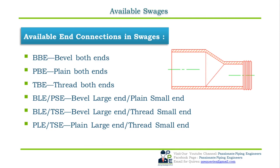Swedges with both ends beveled are for direct connection to butt welded fittings or bevel-ended pipes. Socket welded swedges have plain ends on both sides to be inserted into sockets, or one side plain and one side beveled for butt welded fittings with large bore ends. Threaded swedges have male thread ends on both sides for threaded fittings, or one end threaded and the other beveled for butt welding with large bore pipes.